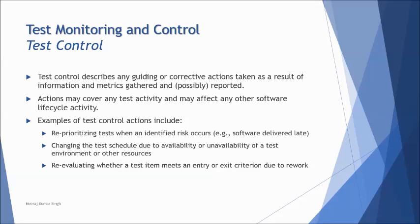Here are some sample examples of test control activities. For example: reprioritizing tests when an identified risk occurs — if you had already created and prioritized test cases but identified certain risks, and that risk actually happens, the next action would be to reprioritize the tests to accommodate that risk. Changing the test schedule due to availability or unavailability of a test environment or other resources. Re-evaluating whether a test item meets entry or exit criteria due to rework. Overall, test control is about having an alternative plan or action to take if execution seems to be deviating from the plan.